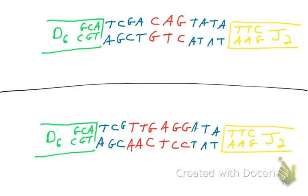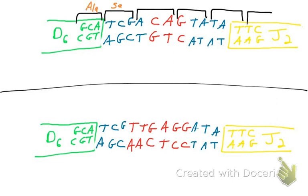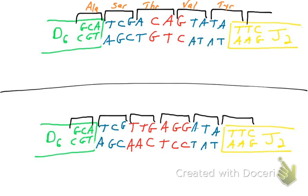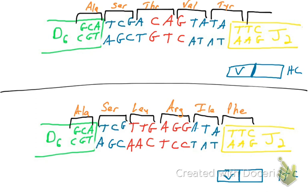If you look at the joints, they are different, and that's where diversity comes in. The top B cell and the bottom B cell use the exact same D and J, but the junction between the two is different. So when the open reading frame is eventually read — transcribed and translated — you're going to see that the amino acids these genes encode are slightly different. The top strand has instructions for alanine, serine, threonine, valine, tyrosine. The bottom strand, even though you started with the same D and the same J, the open reading frame is different: alanine, serine, leucine, arginine, isoleucine, phenylalanine. So the proteins are going to be slightly different from one another. This is known as junctional diversity.